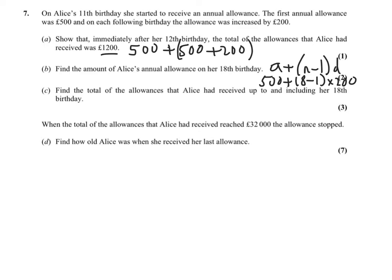Part C, find the total allowances she received up to and including her 18th birthday. So you're going to be using this S to the 8, 8 over 2 is the formula from the formula booklet, 2 times where A is £500 and D is £200. And N is 8, so 8 minus 1 times £200. Chuck that in.